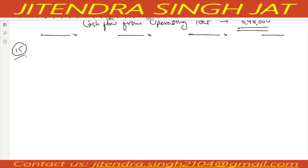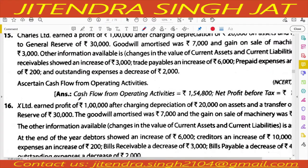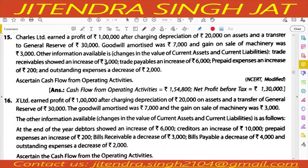Question number 15. Charles Limited earned a profit of Rs. 1,00,000 after charging depreciation of Rs. 20,000 on assets and transfer to general reserve of Rs. 30,000. Goodwill amortized was Rs. 7,000. Gain on sale of machinery was Rs. 3,000.